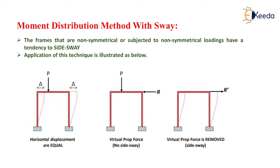We have to analyze the structure when the structure undergoes sway. What do you mean by sway? Frames that are non-symmetrical or subjected to non-symmetrical loadings have a tendency to side sway. What do you mean by side sway? If the frame deflects in the horizontal direction by a delta amount, that frame is said to undergo a side sway.